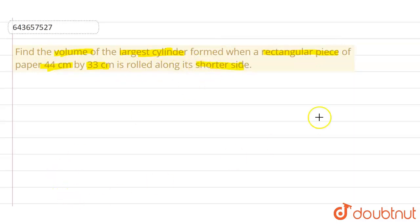Let's say this is a rectangular sheet. This is your rectangular sheet whose length is 44 centimeter, whereas width is 33 centimeter. Now if this sheet is rolled in a form of a cylinder...